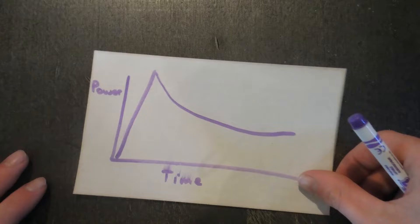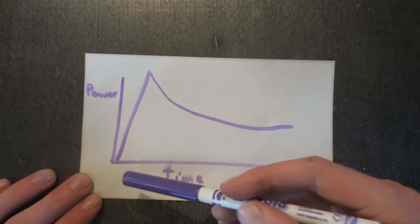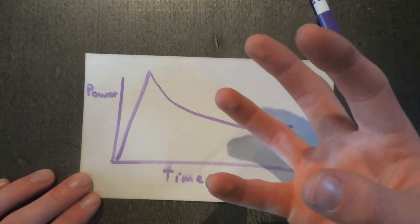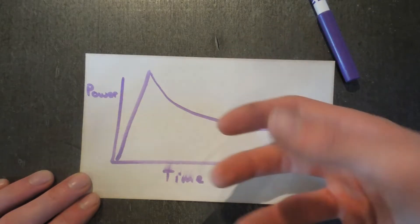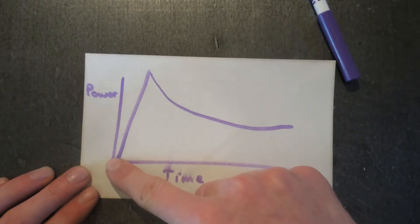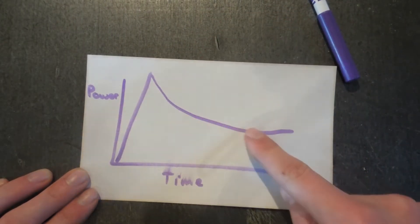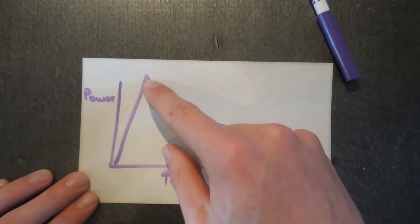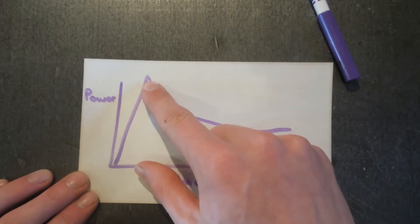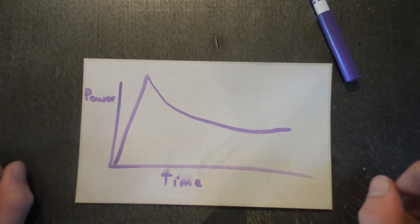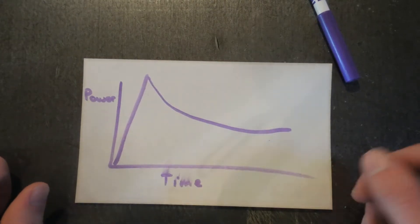The problem is that big machines like this require a lot of power when they're starting. As soon as you turn it on, it sucks tons of power just to get that initial kick to get it started. Once it gets up to speed, it eases off and doesn't require that much. But the problem is this spike here is too much power.